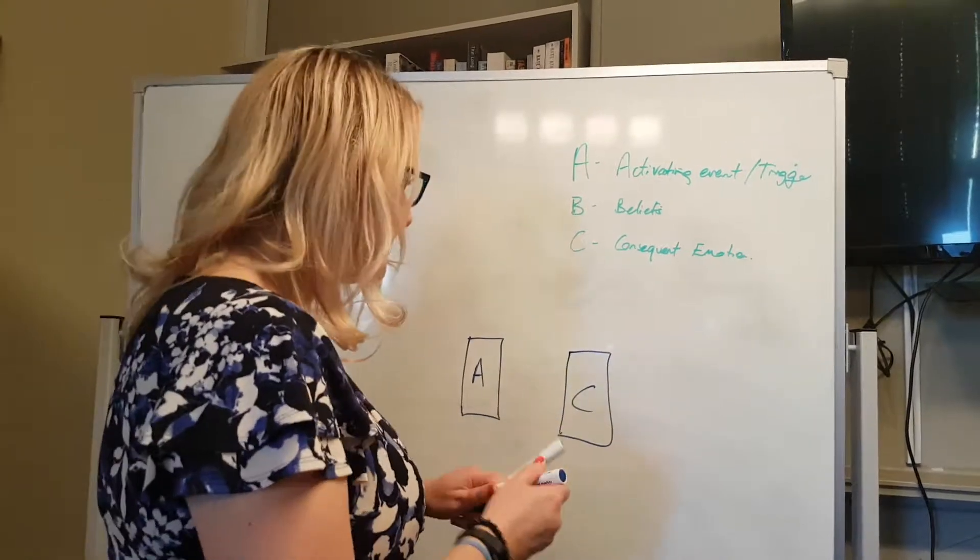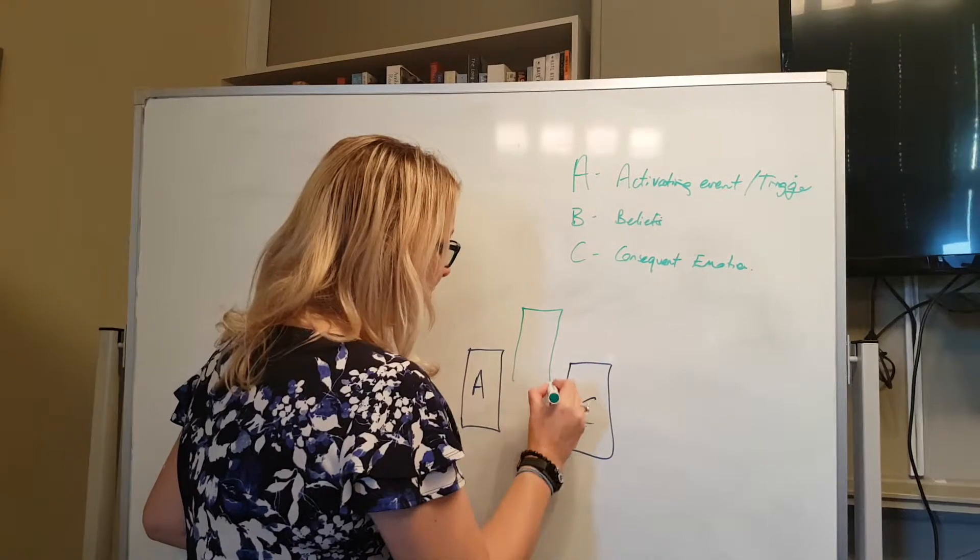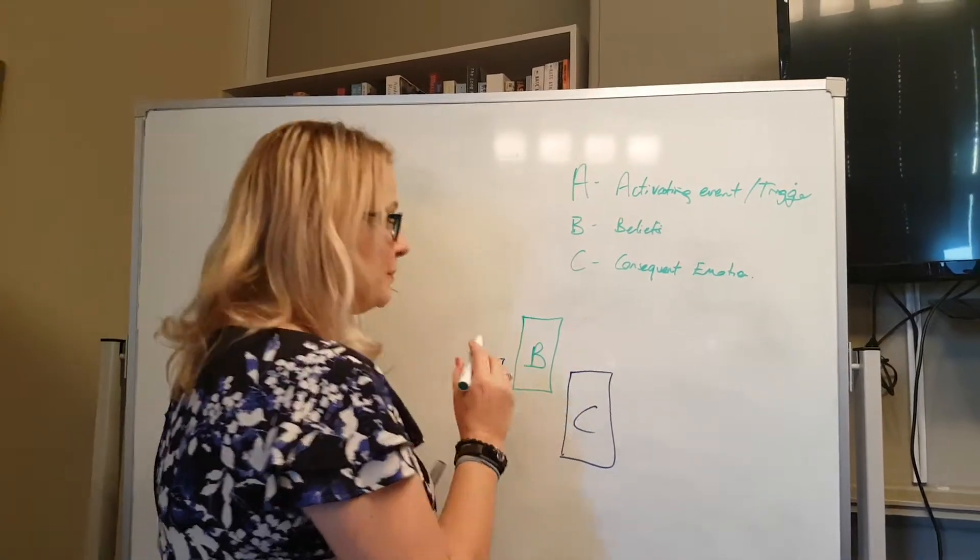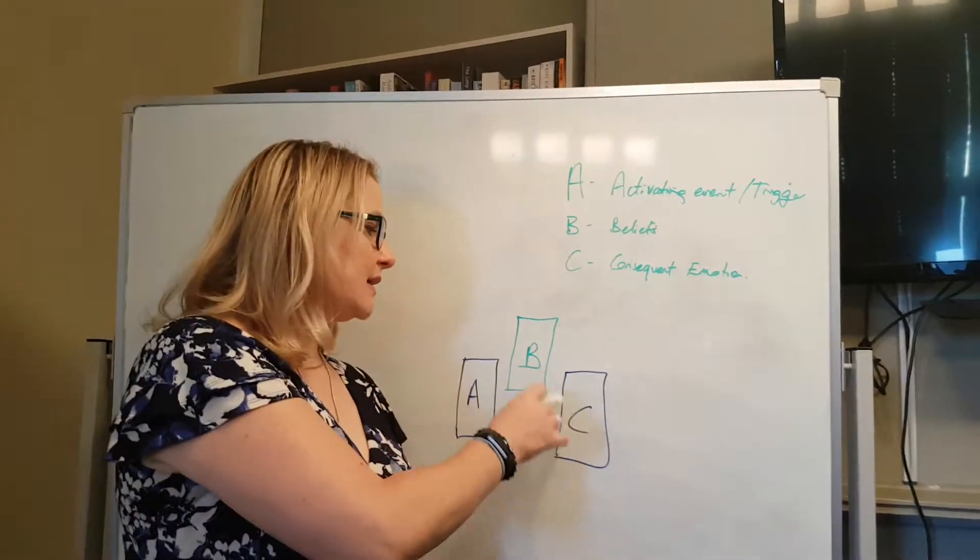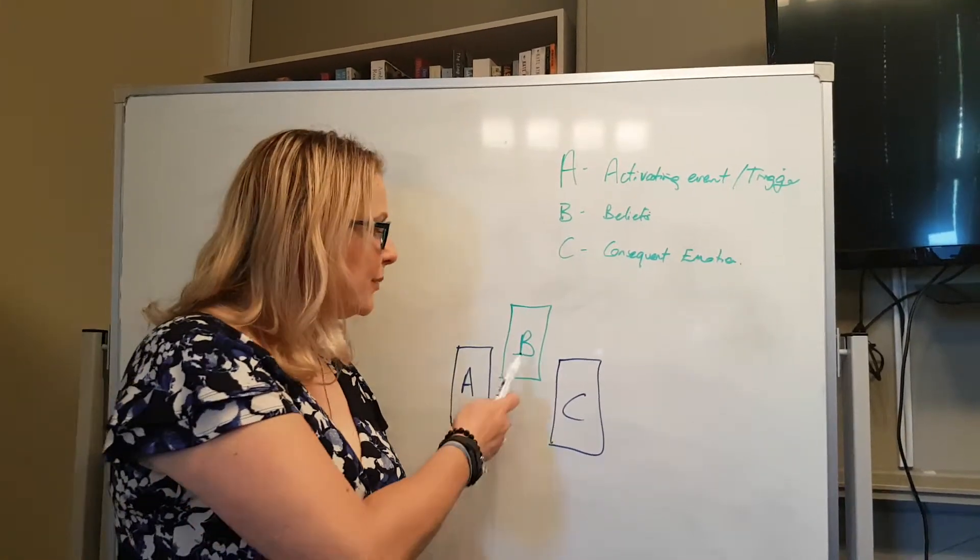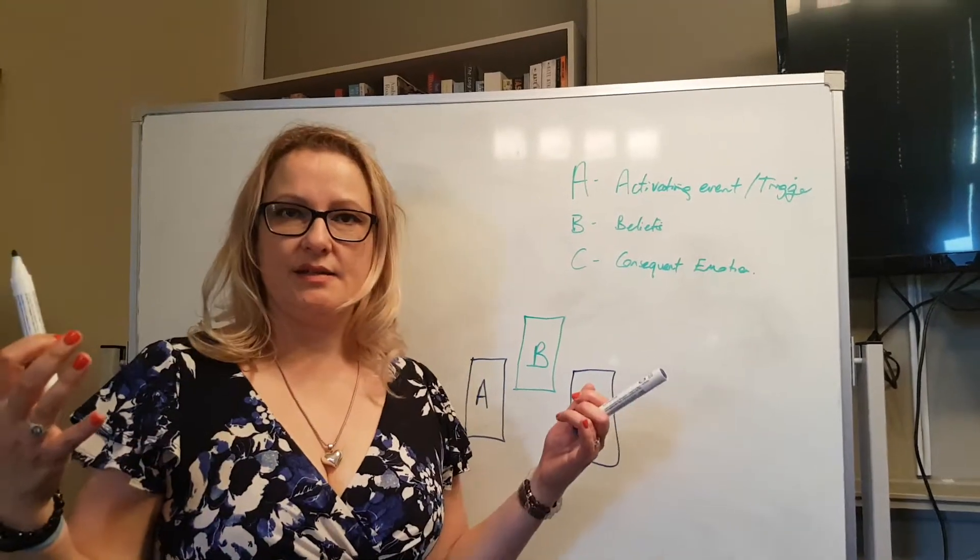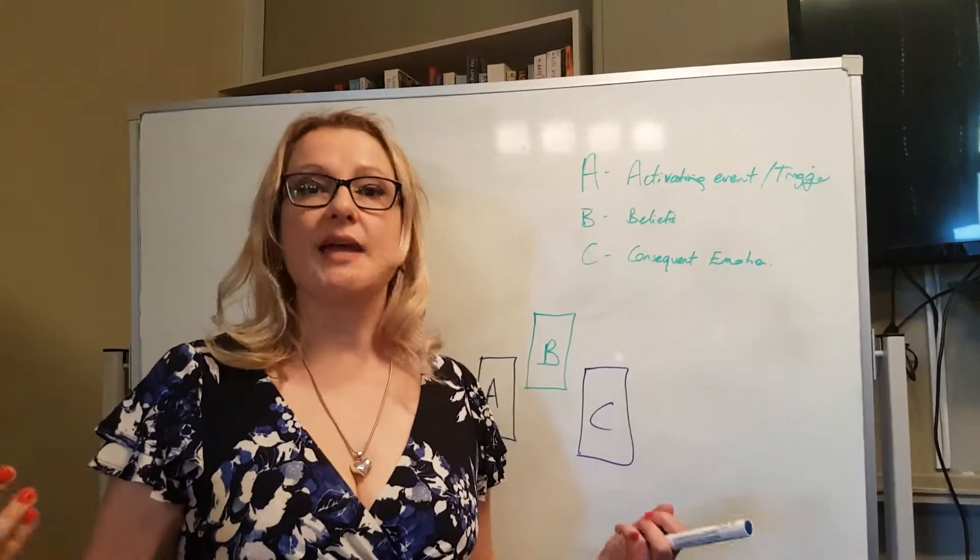So what it is, is in between A and C is a belief. And it's the belief that makes a person react in a certain way. So, for example, if someone said, oh, when there's, how dare they, and they get angry.